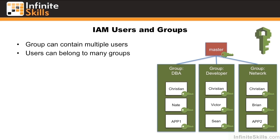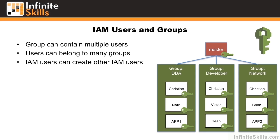We add several users to each of these groups. The DBA group could have access to DynamoDB and SimpleDB. The developer group may be able to spin up EC2 instances, and the networking group perhaps could control Route 53. We see here that Christian is a very important person in our company, and he belongs to all three groups. Victor and Sean are only in the developer group, only Nate is in the DBA group, and only Brian, in addition to Christian, is in the networking group. Notice we can also have applications in these groups. Each of these users has their own individual set of keys for logging into the console and for signing API requests. IAM users can create other IAM users, but the grantor's permissions have to be greater than that of the grantee's.